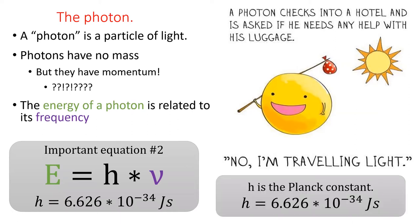Planck's constant is probably the tiniest number you will ever use in this course and probably any other courses you take. It is 6.626 times 10 to the negative 34 joules seconds. It will be given to you on exams.